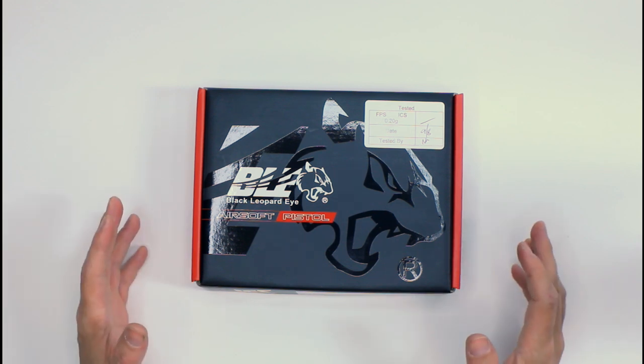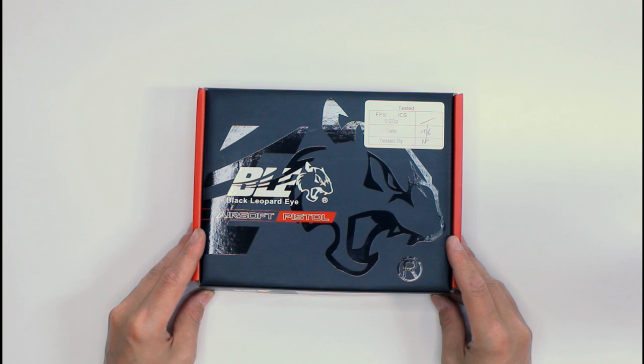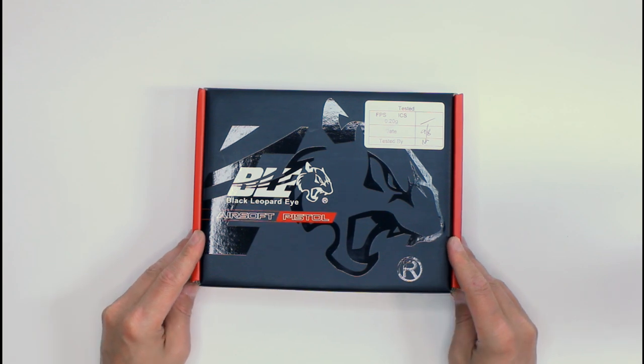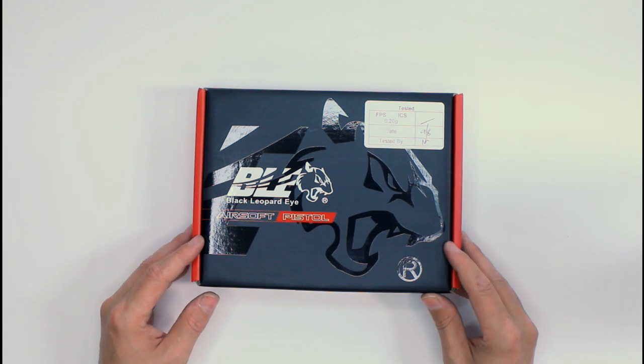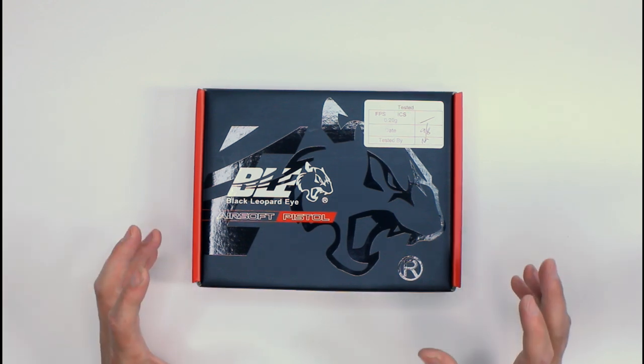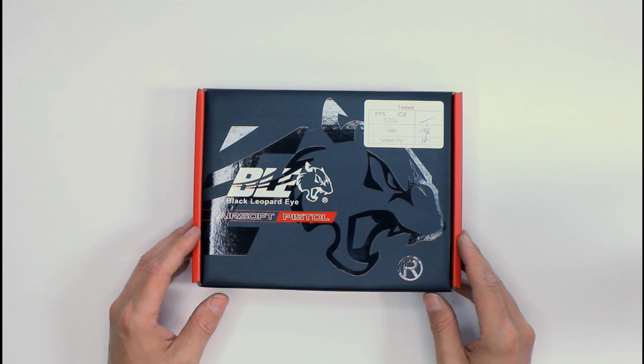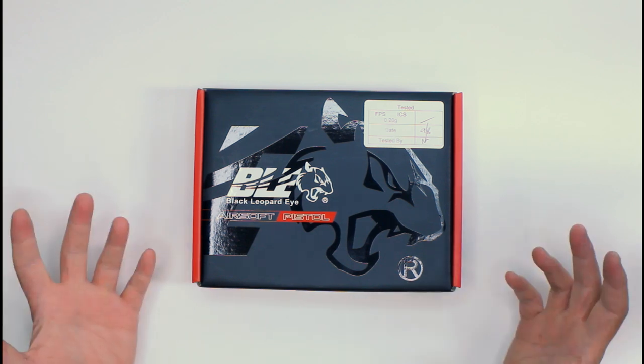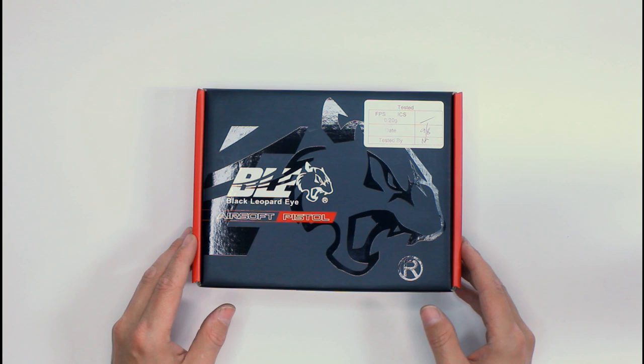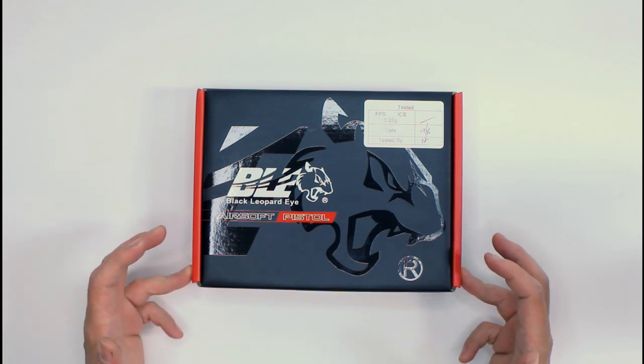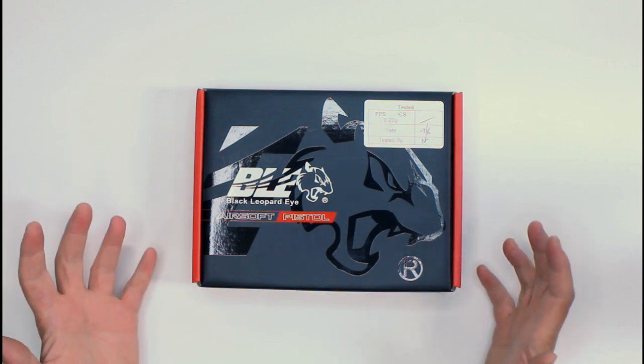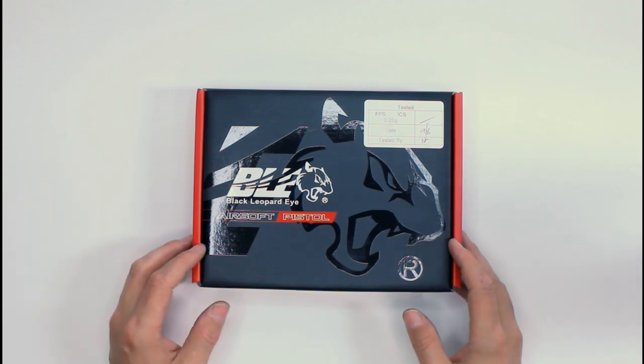So we're not gonna go into all the details of the pistol just yet. Basically right here we're just gonna open the box and see what comes in the box as standard. This was sent out to me by ICS through Fire Support here in the UK. So if you want to pick one up for yourself, you can go to Fire Support and they have them in stock, which is pretty cool.